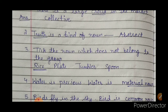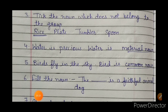The third question is to find the noun that does not belong to the group. There are four words: rice, plate, tumbler, spoon. Plate, tumbler, and spoon are things we use in the kitchen. Rice is also used in the kitchen, but among the four, rice is a material noun. That is why it is different from the remaining three words. So the answer is rice.